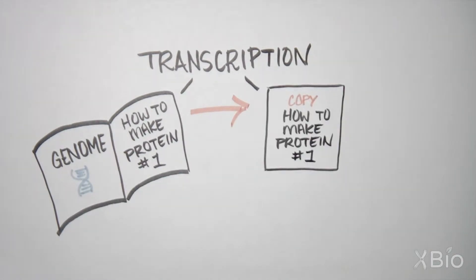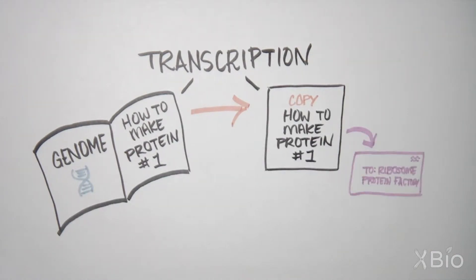Cells first copy just one gene and send this copy to a factory in the cell, called a ribosome, which will use the instructions to build a protein.